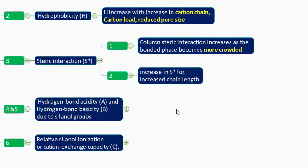Steric interaction can also increase because of increased chain length. So the two important factors governing steric interaction are: a crowded, branched stationary phase, and a longer stationary phase chain length — both result in greater steric interactions.